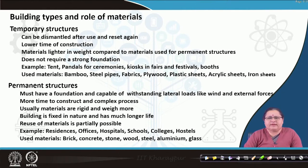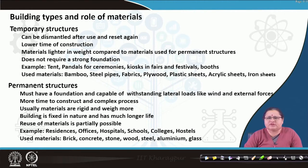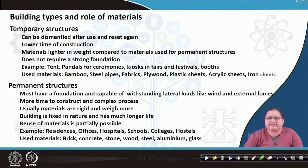Usually materials in permanent structures are rigid and have higher weight. They are fixed to the ground. Reuse of the materials is only partially possible — say you can retrieve some wooden frames from windows, some iron rods from castings, or maybe some bricks from walls. Examples of permanent structures are offices, institutions, schools, colleges, hospitals — buildings where we as architects need to study. Brick, concrete, stone, wood, steel, aluminium, glass, plastics — these are mostly the materials used for building up such permanent structures.